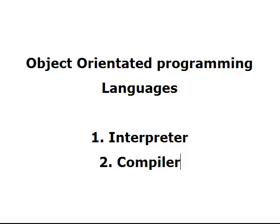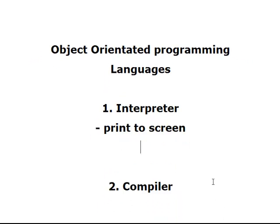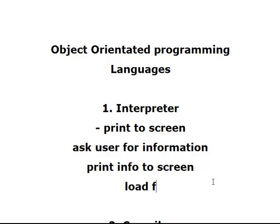What's the difference between an interpreter and a compiler? An interpreter takes instructions — for example, print to screen, ask user for information, print info to screen, load file, close file — so whatever instructions we give are executed one by one. It would follow the first instruction, then go to the second, then go to the third, and so on. So it will interpret every line, line by line.